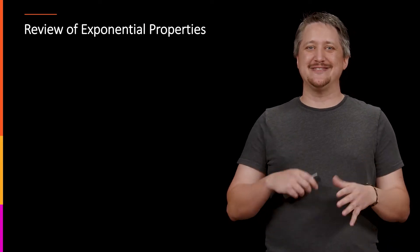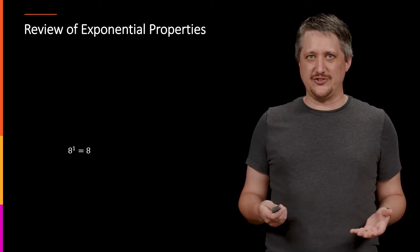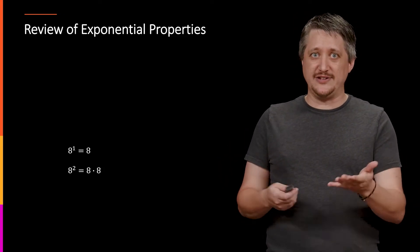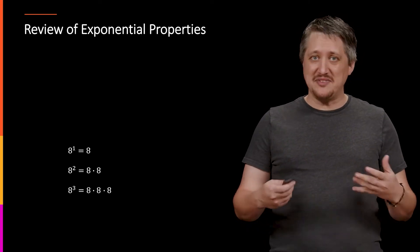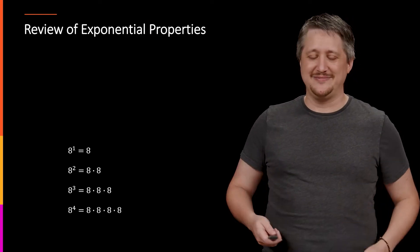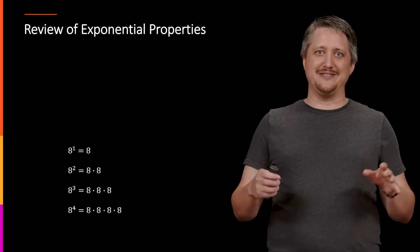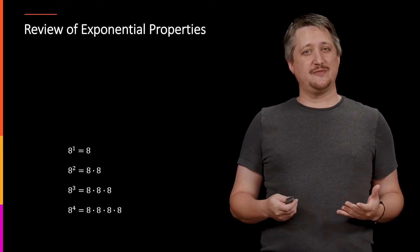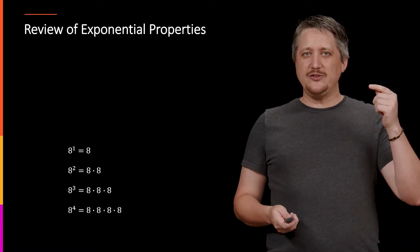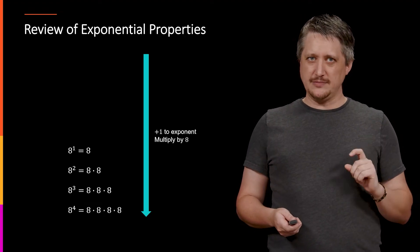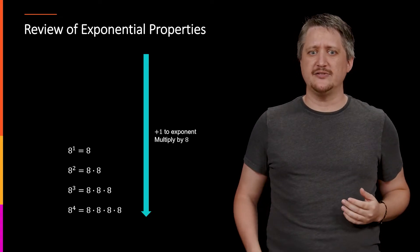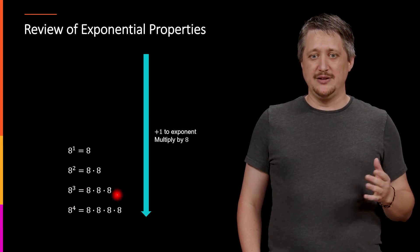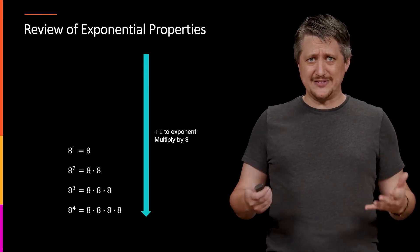Let's think about what it means to take an exponent. Eight to the one is just eight. Eight squared is eight times eight. Eight cubed is eight times eight times eight. Eight to the fourth is eight times eight times eight times eight. I want to point out a pattern: as we increase the exponent by one, what we're doing is taking the previous step and multiplying by eight. So going from eight cubed to eight to the fourth, we took that value and multiplied it by another eight.